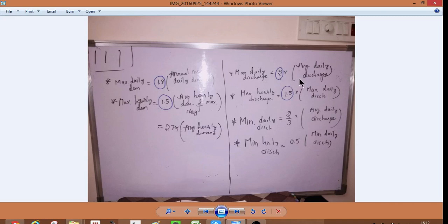Maximum daily discharge is twice average daily discharge, and maximum hourly discharge is 1.5 times of maximum daily discharge. Here it is average discharge, hourly discharge of maximum day.